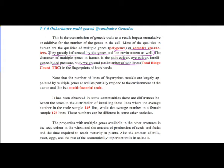We will study eye color as an example of multiple gene traits in humans. The number of fingerprint ridge patterns is largely determined by multiple genes and is also partially influenced by the environment of the uterus — making it a multi-factorial trait, where the phenotype is affected by not only genes but also environment.